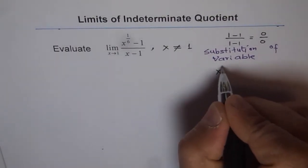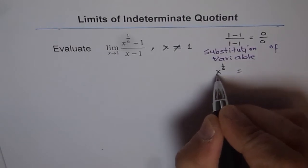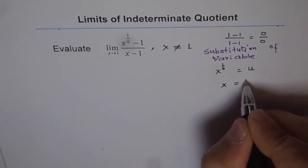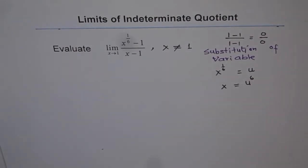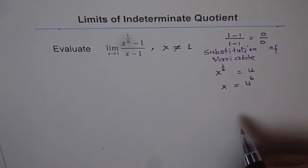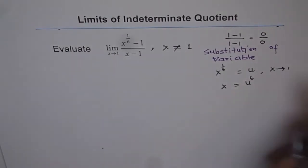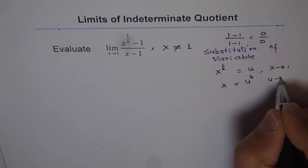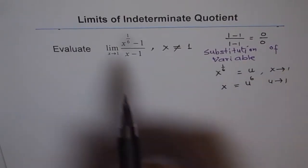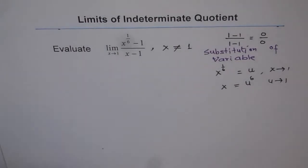Here, x to the power of 1/6 is the difficult radical to deal with, so let's substitute it with another variable. Let x to the power of 1/6 equal u. Then x equals u to the power of 6. That is how we replace x^(1/6) and x with u and u^6 respectively. Now, when x approaches 1, then 1 to the power of 1/6 is also 1, so u also approaches 1. Whenever you substitute a variable, you must also determine the new limiting value.